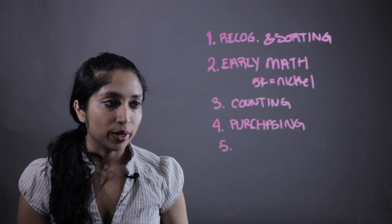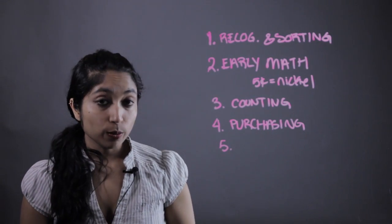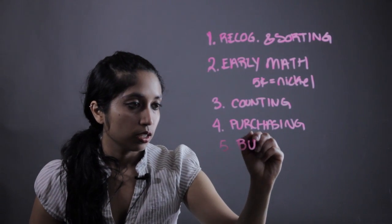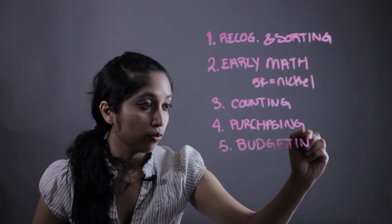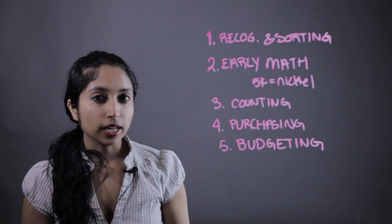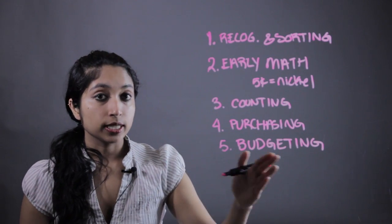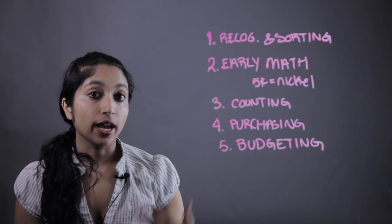The last thing about money is budgeting, and it never hurts to get that in their heads too early. A fun way to do that is maybe to set up different piggy banks, like one for saving and one for spending. Because a lot of kids just have one big piggy bank. But if we already help them start categorizing how they're putting their money, it's going to help them in the future when they have to do that as adults.